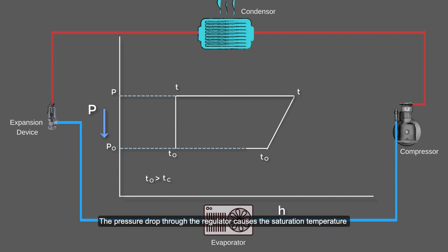The pressure drop through the regulator causes the saturation temperature of the refrigerant to fall, so that it will boil at the low temperature of the evaporator.